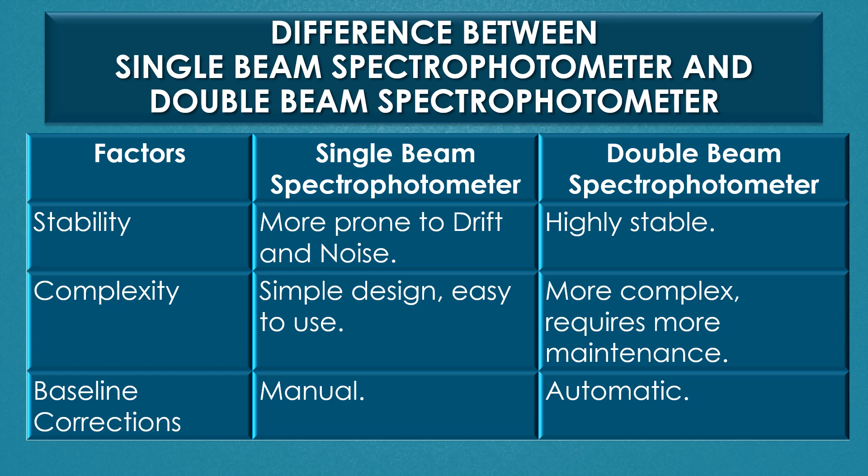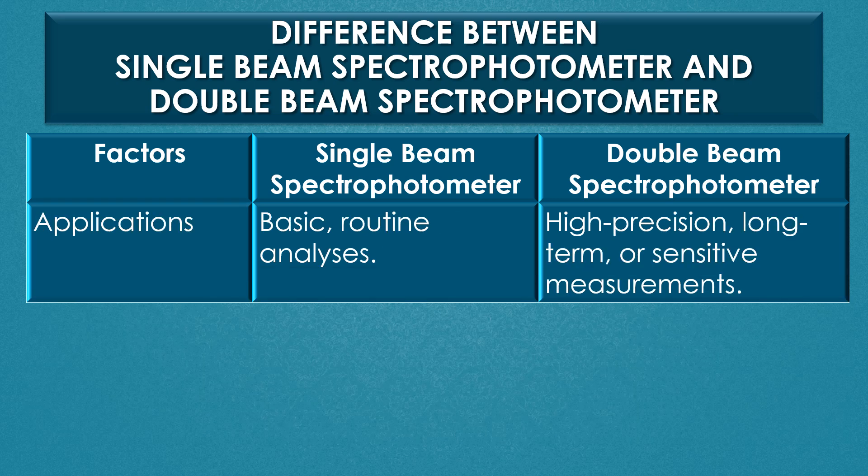Next, baseline corrections: in a single beam spectrophotometer, baseline corrections will be done manually, but in a double beam spectrophotometer, the baseline corrections will be done automatically. Finally, applications: the single beam spectrophotometer is used for basic and routine analysis, but the double beam spectrophotometer is used for high precision, long-term, or sensitive measurements.